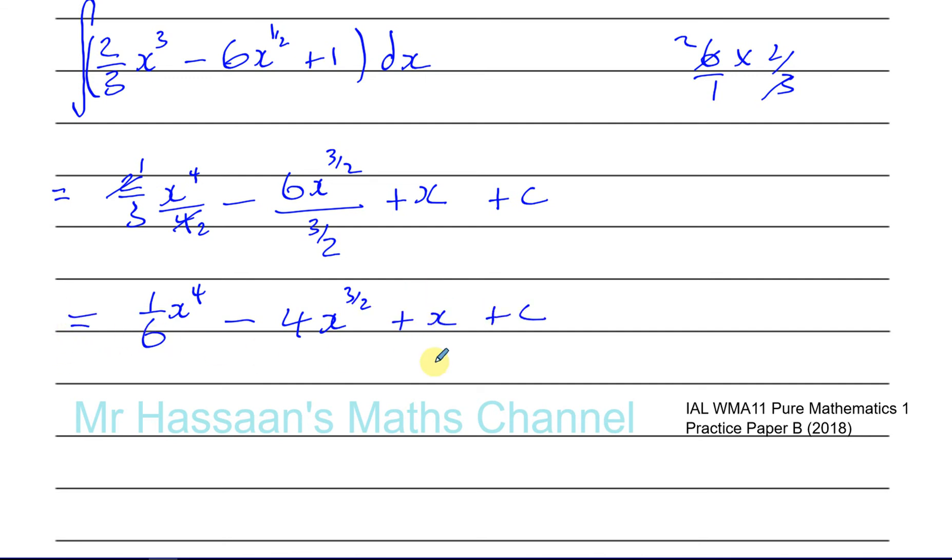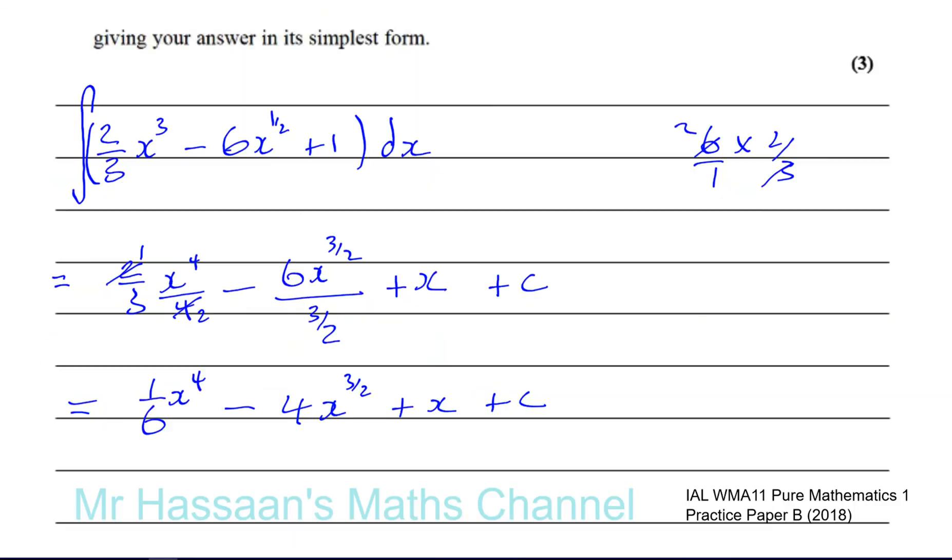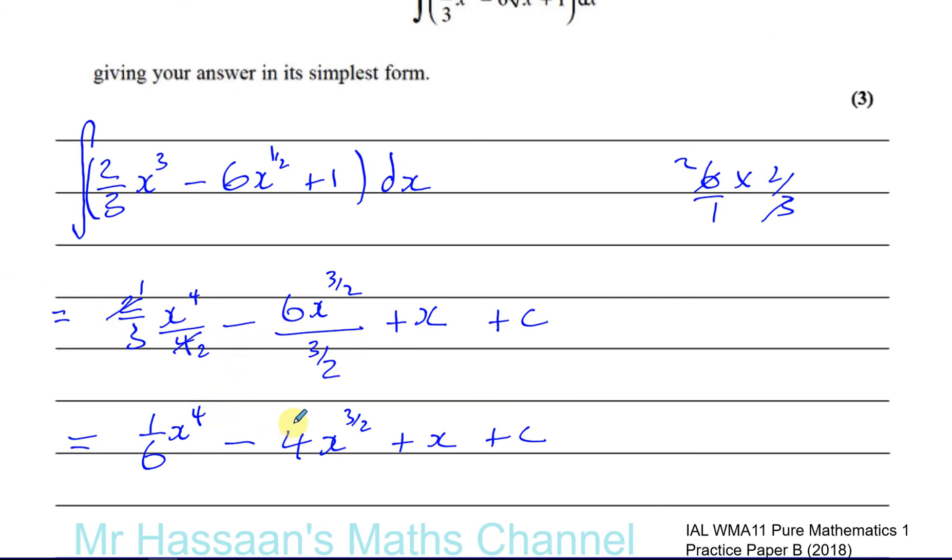So there we have our answer for question number 2. Pretty simple integration there. 1 sixth of x to the power of 4 minus 4, x to the power of 3 over 2 plus x plus c. And there we have it.